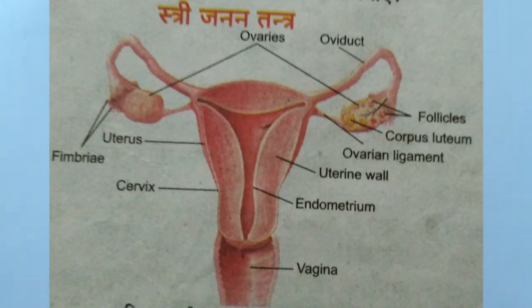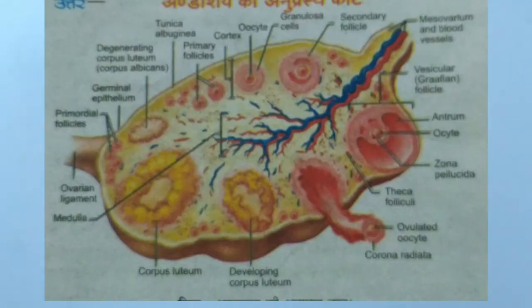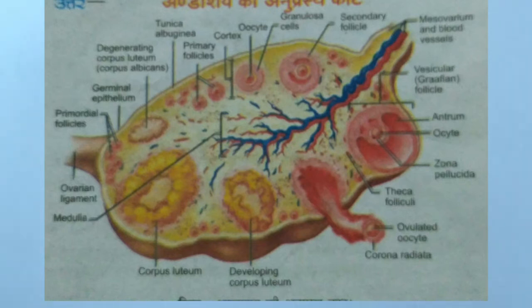This is a very, very important diagram — the labelled transverse section (anaprashth kaat ka namaankit chitr) of Amoeba. This is an extremely important diagram, so please practise it thoroughly.